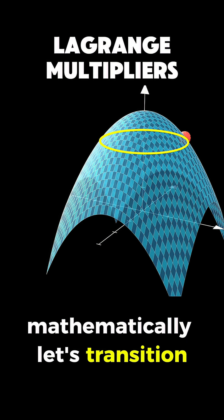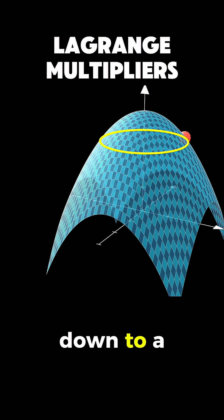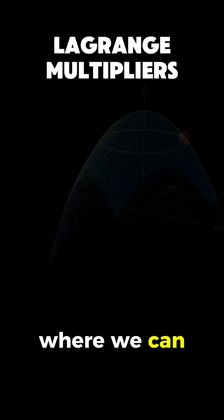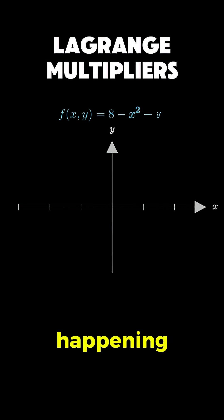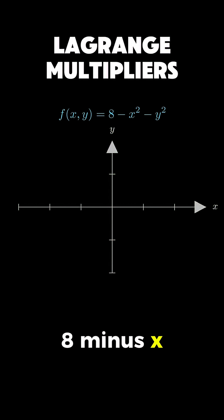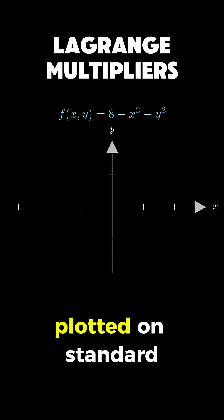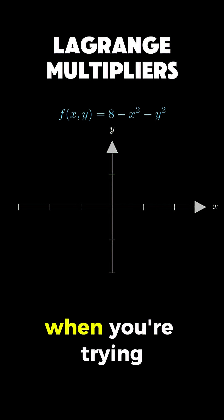Let's transition from our 3-dimensional mountain view down to a cleaner 2-dimensional perspective, where we can really see what's happening. Here we have our function f equals 8 minus x squared minus y squared, plotted on standard xy axes.